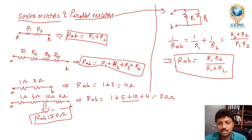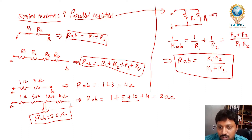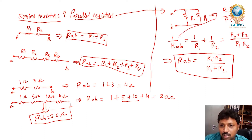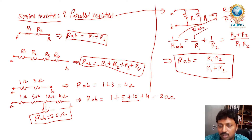In a parallel circuit, RAB is equal to the product of the two resistors — R1 into R2 — divided by their sum in the denominator, R1 plus R2. This gives you the total RAB.